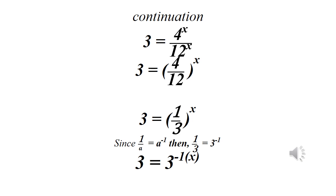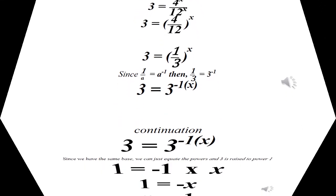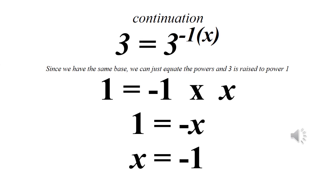Since 1 over a equals a raised to minus 1, we have 1 over 3 equals 3 raised to power minus 1. So 3 equals 3 raised to power minus x. Since the bases are the same, we equate the powers: 1 equals minus x, so multiplying both sides by minus 1 gives x equals minus 1.